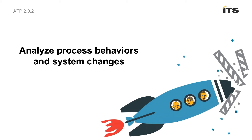ATP 2.02 can analyze process behaviors and system changes. Symantec Endpoint Protection uses Symantec Online Network for Advanced Response, also known as SONAR technology, for process behavior submissions and remediation. However, Symantec Endpoint Protection provides no insight into the details of the SONAR submissions. When you integrate Symantec Advanced Threat Protection 2.02 and later with Symantec Endpoint Protection, ATP can provide insight into the details of the SONAR submissions, including not only the system changes that occur but also the file attributes.